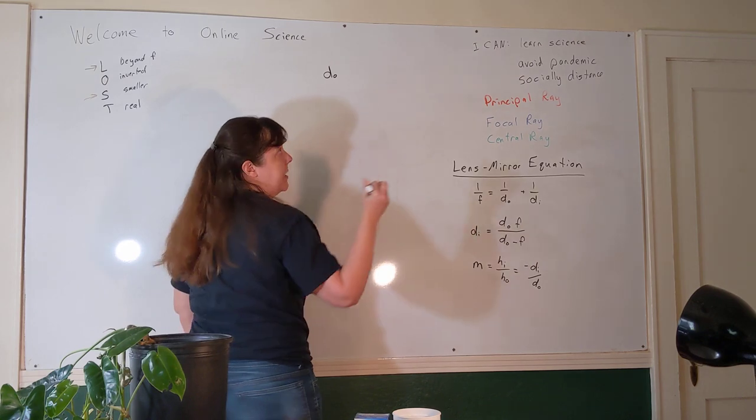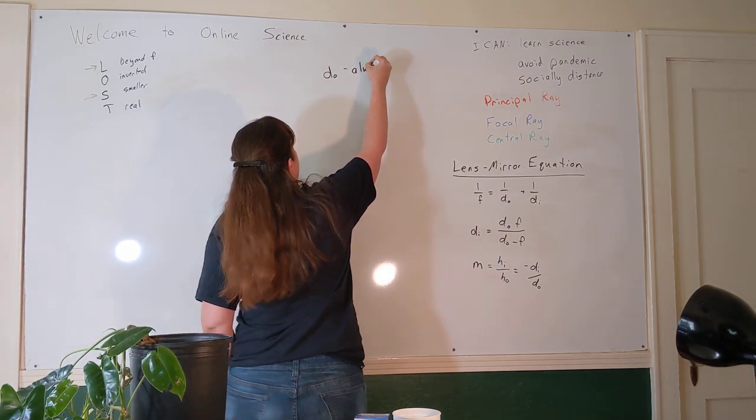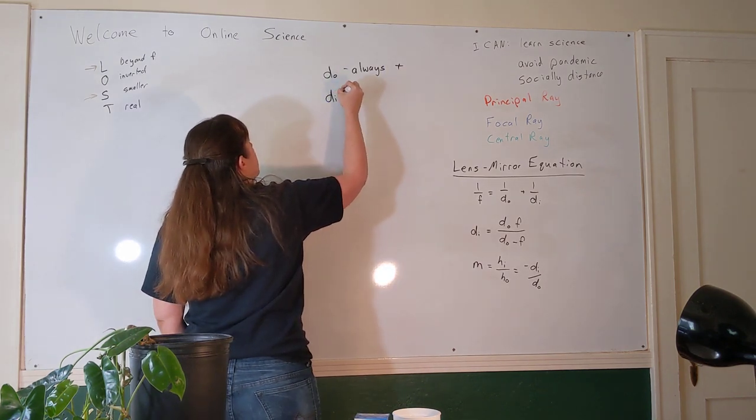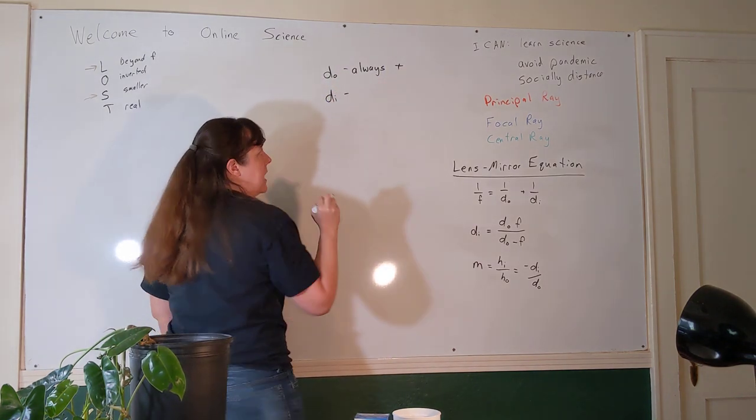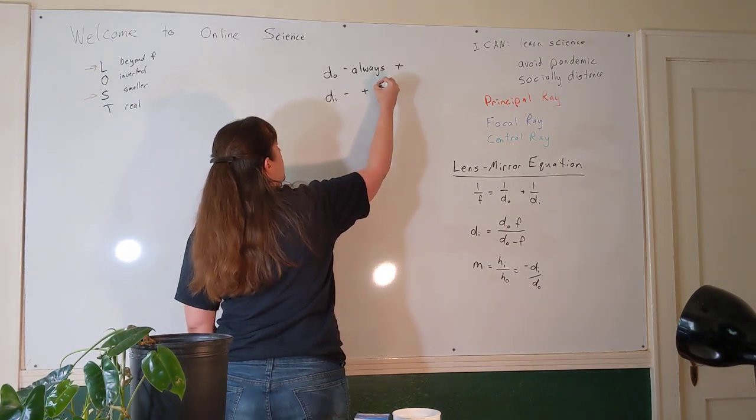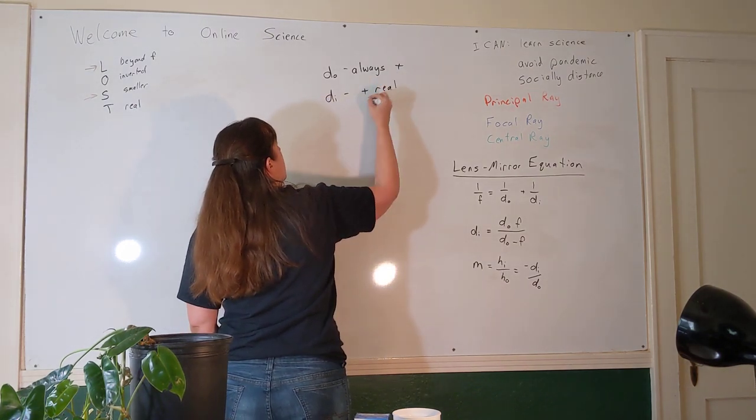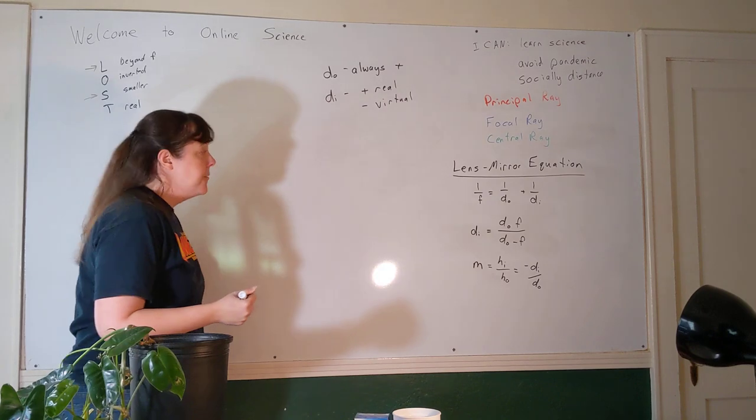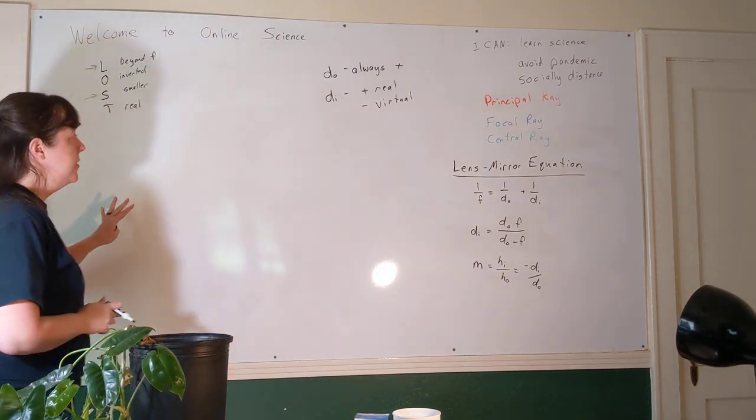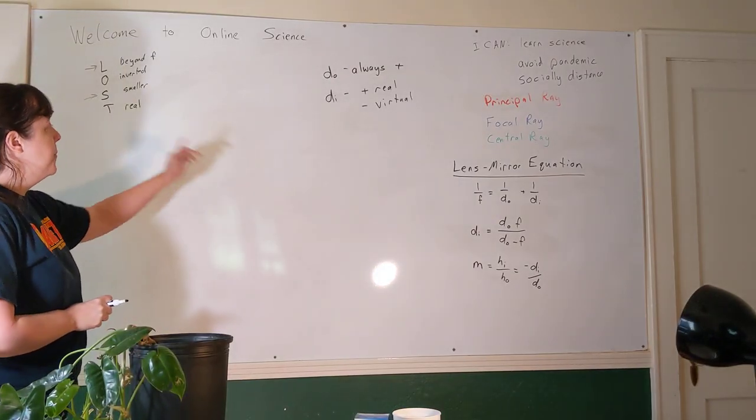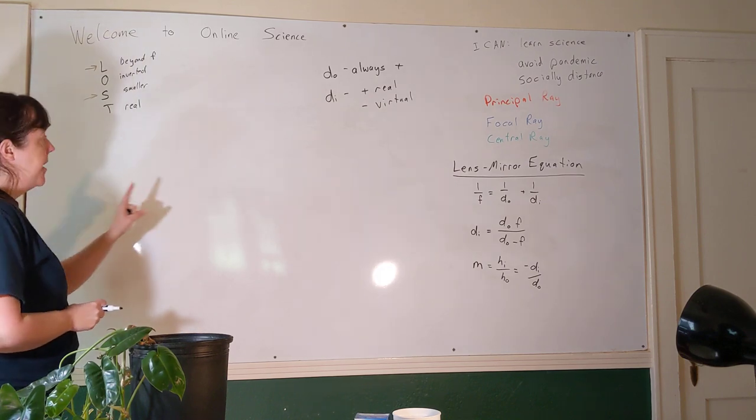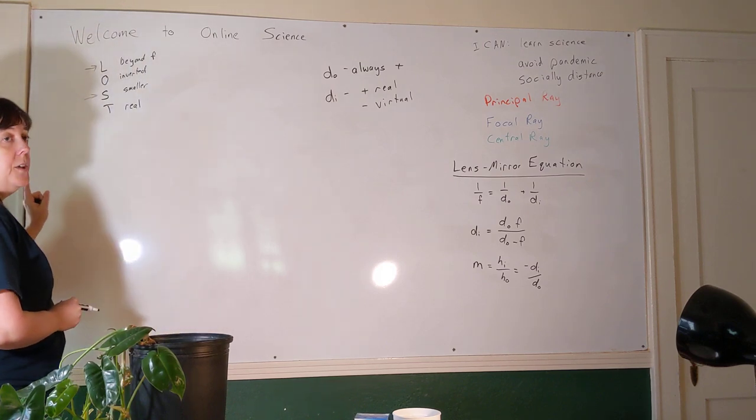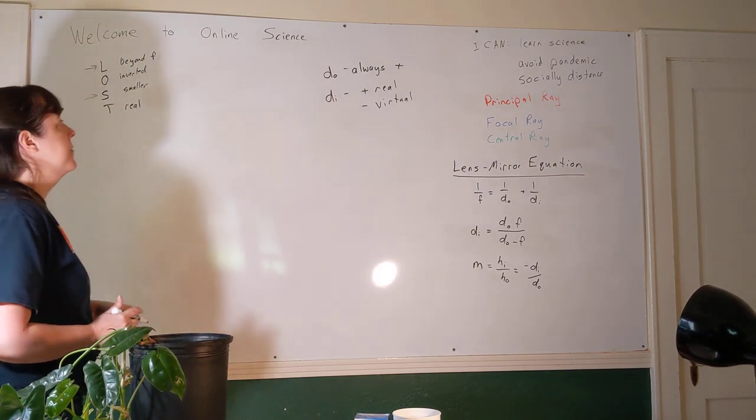DO, the object distance, is always positive. The image distance is positive for a real image and negative for a virtual image. If we had created a virtual image for this mirror, the image would have been behind the mirror, on the other side of what is kind of the zero point, where the mirror crosses the principal axis. So it makes sense that when that image position is negative, what we have is a virtual image.